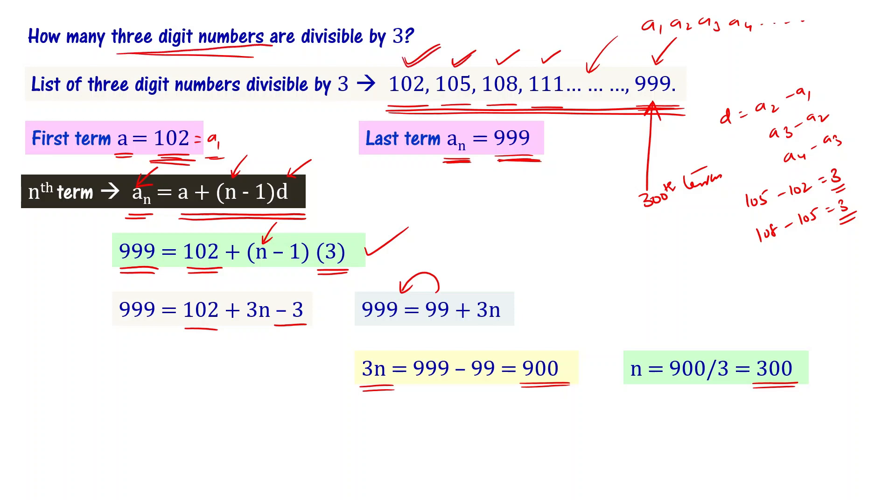So the first term, second term, third term, fourth term... counting this way, we have 300 terms total. Among all three digit numbers, 300 of them are divisible by 3.